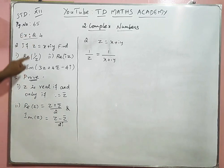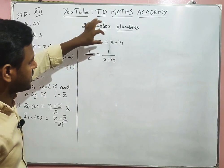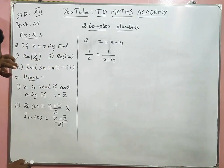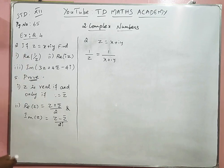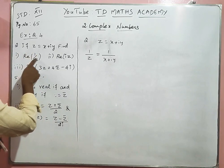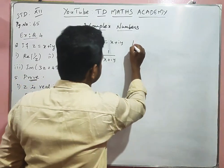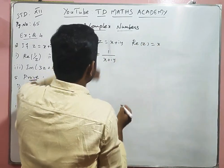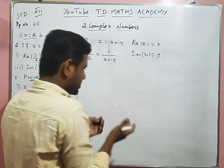The second question: given z = x + iy. Find in rectangular form. The question asks to find the real part of 1/z. We know that real part of z equals x, and imaginary part of z equals y.